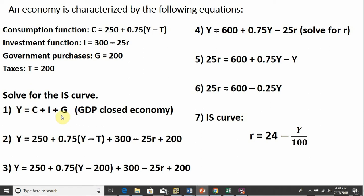So Y equals C plus I plus G in a closed economy. And our first step is to substitute in for these three variables. So for C, we're going to just plug in the consumption function. For I, we will plug in the investment function, 300 minus 25R. And G is just $200.